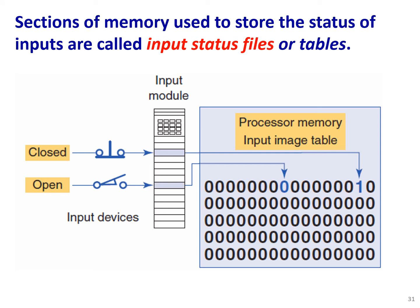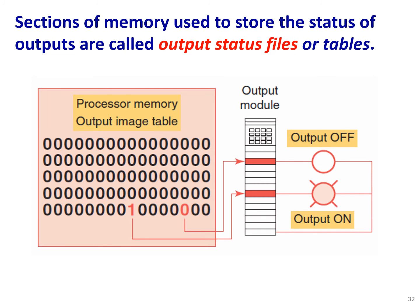Sections of memory used to store the status of inputs are called input status files or tables. In the input image table, inputs are stored as ones or zeros, and you can locate those values there. The same applies to the output status file — there is an image table for the outputs, and the output module reads from memory and updates the outputs.